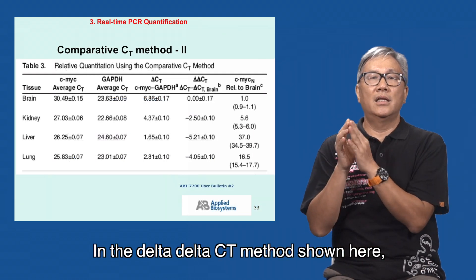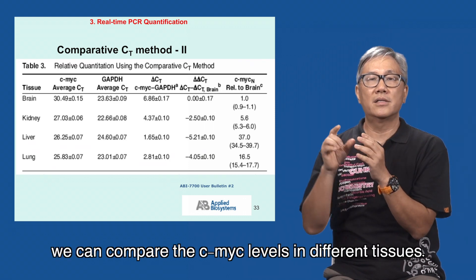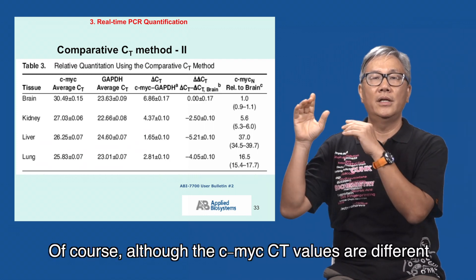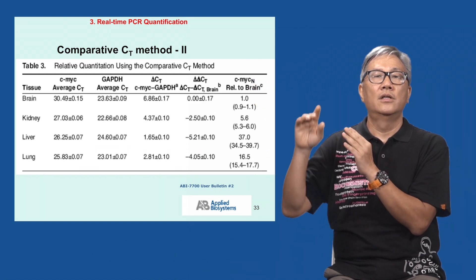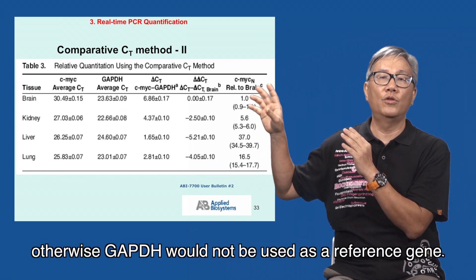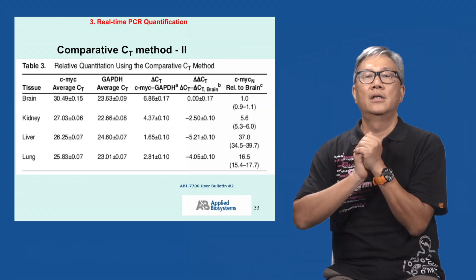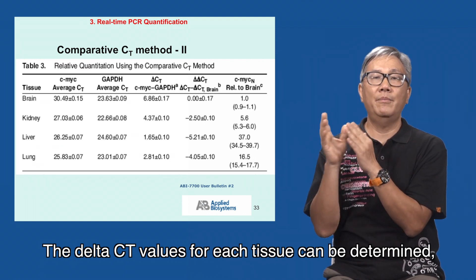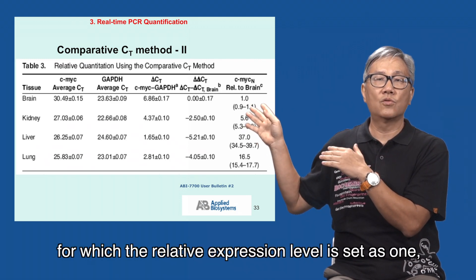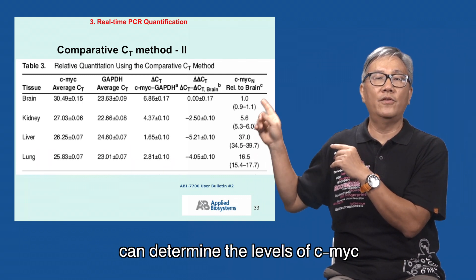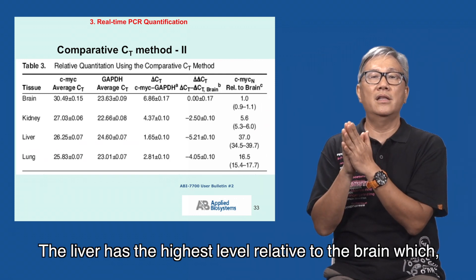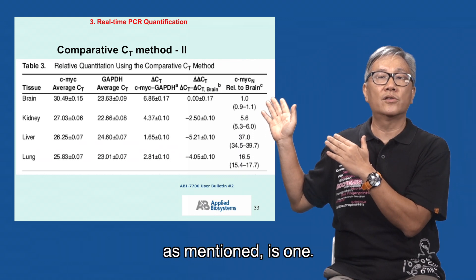In the delta-delta-CT method shown here, we can compare the CMYK levels in different tissues. Although the CMYK CT values are different in different tissues, the GAPDH level should be more stable — otherwise GAPDH would not be used as a reference gene. The delta-CT values for each tissue can be determined and expressed relative to the brain, for which the relative expression level is set as 1. The delta-delta-CT method can determine the levels of CMYK in different tissues relative to GAPDH. The liver has the highest level relative to the brain, which is 1.